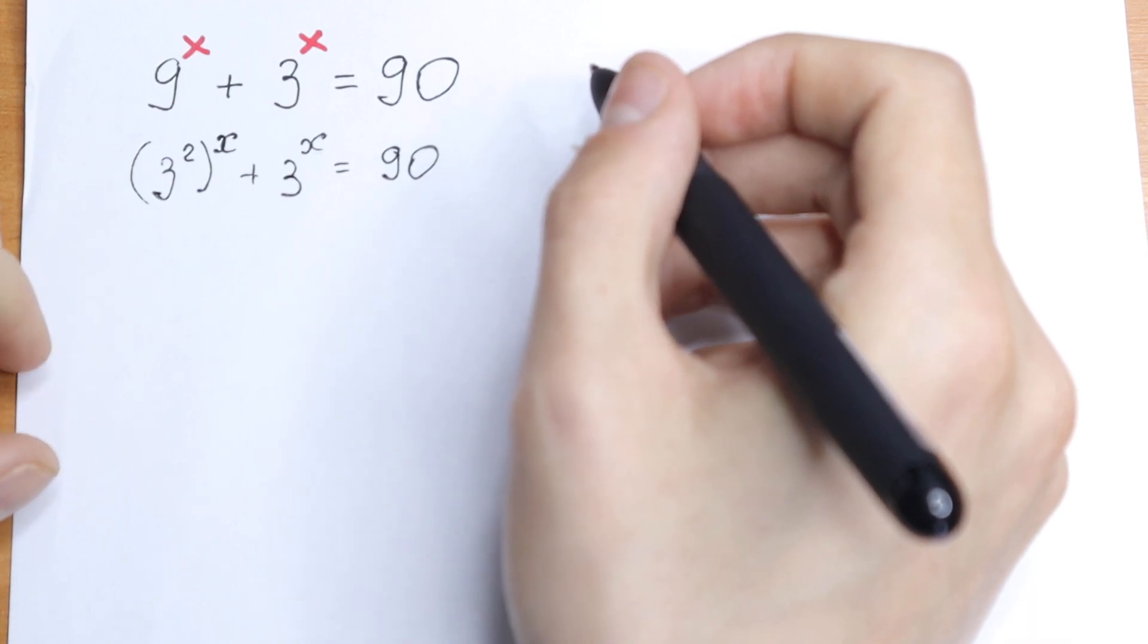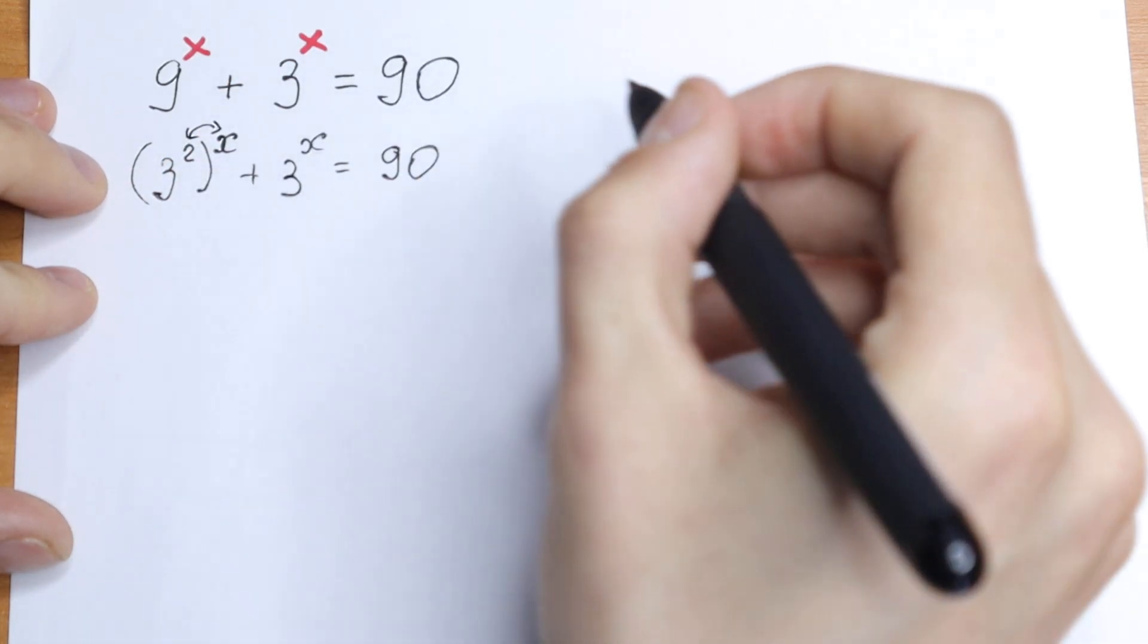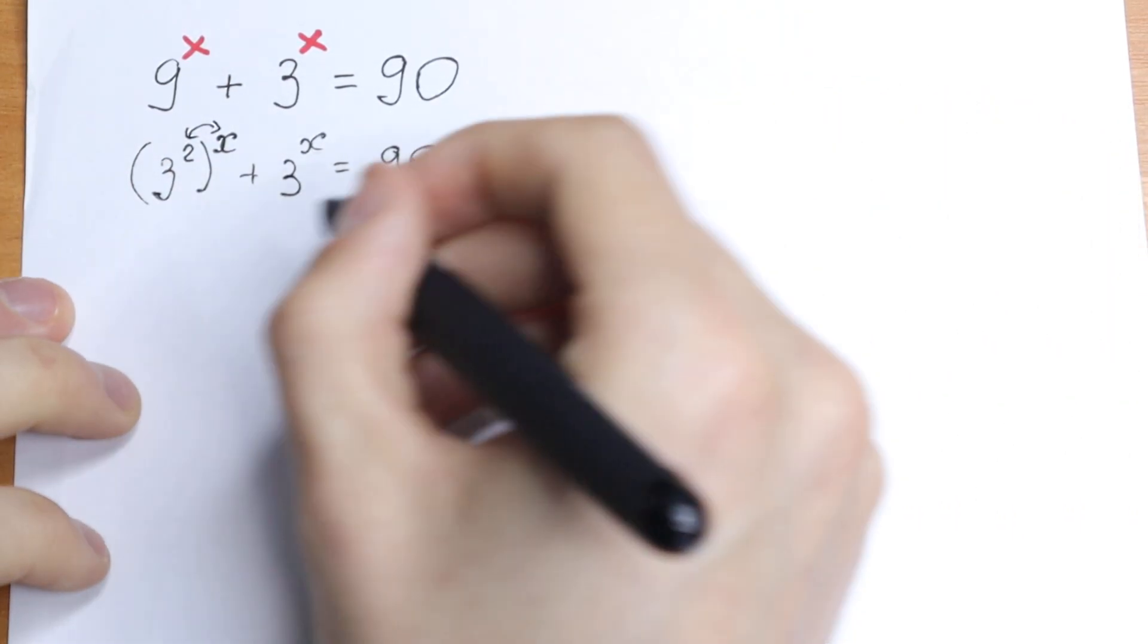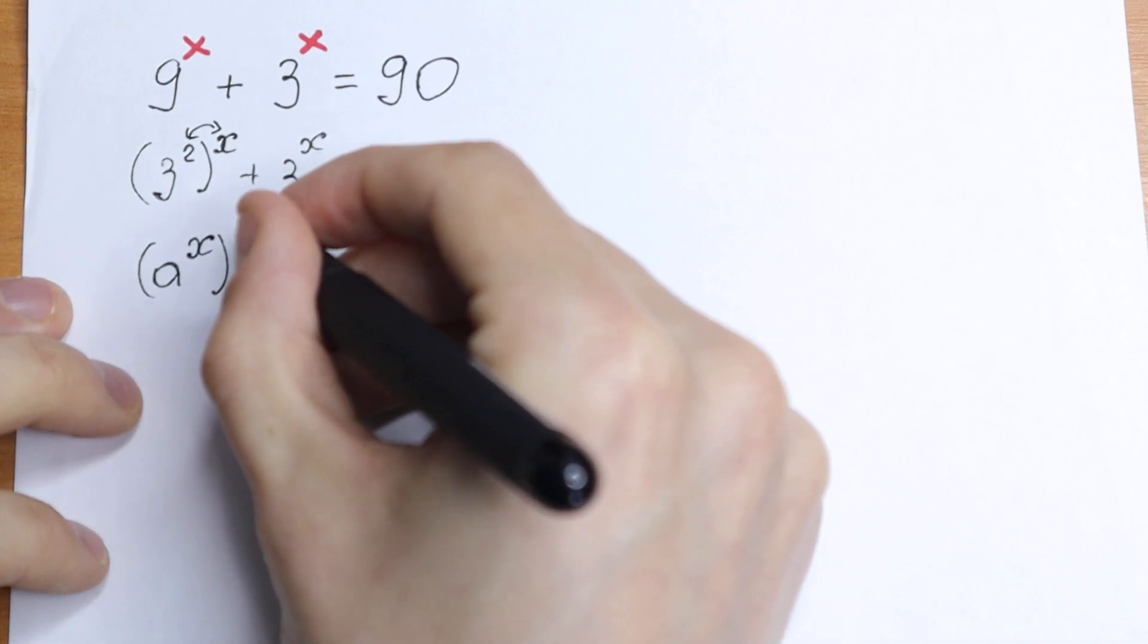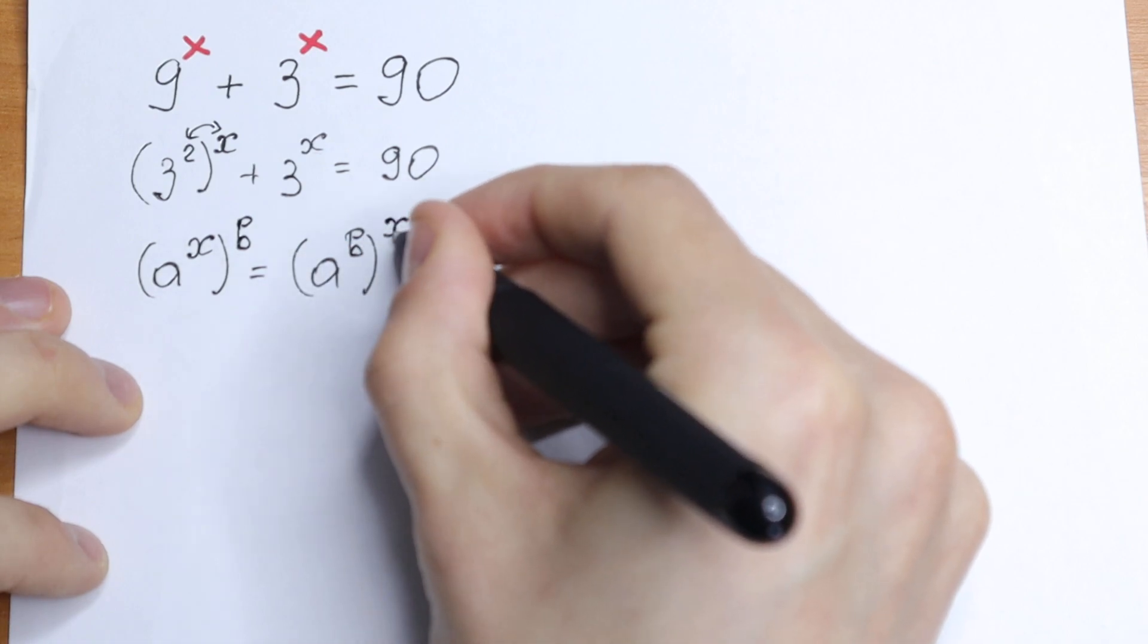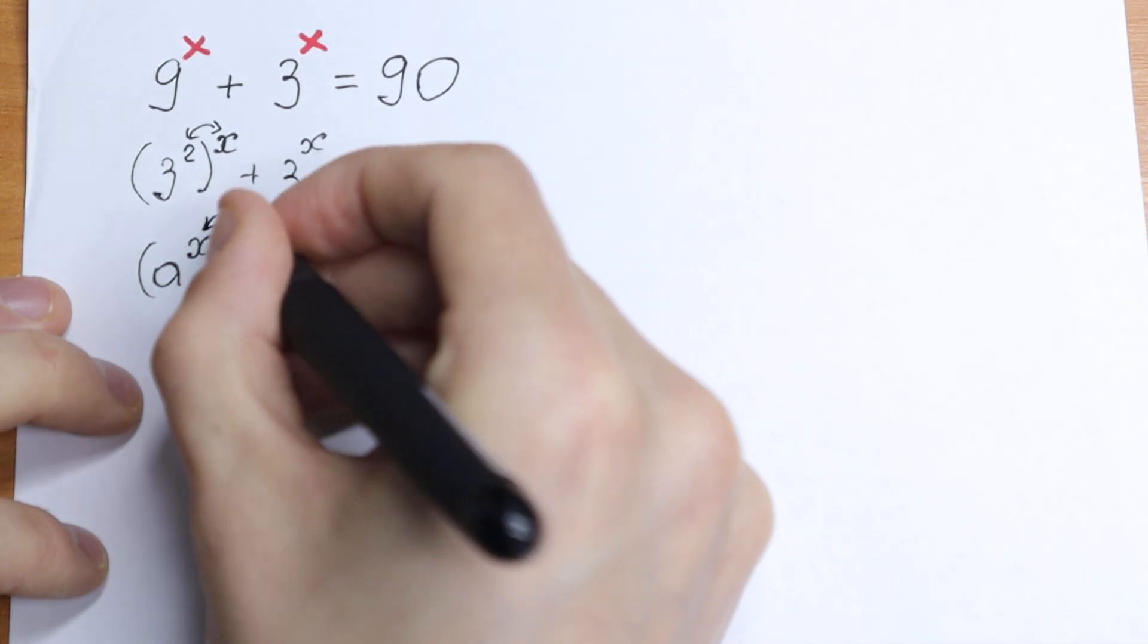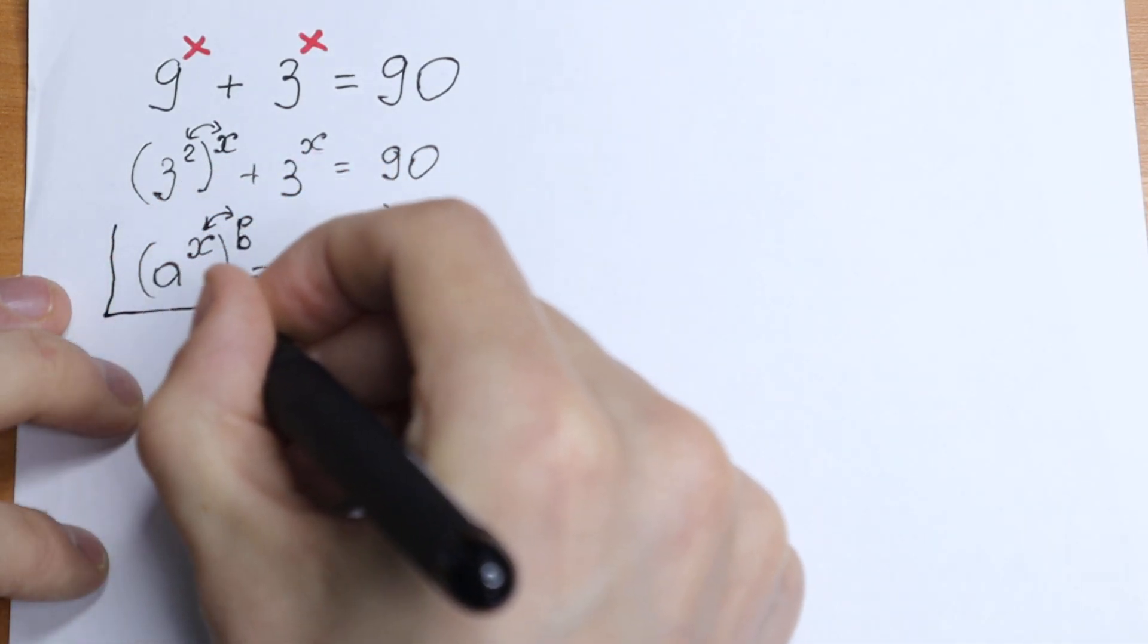We need to know right now about the rule of interchange. So we can swap these exponents, these powers. This is the rule. If we have a to the power x raised to the power b, we can write it as a to the power b raised to the power x. So we can swap these exponents, these powers and this is a really good rule to know.